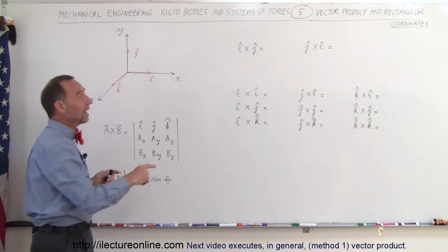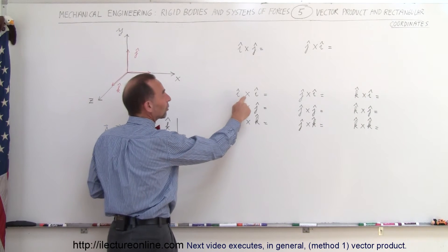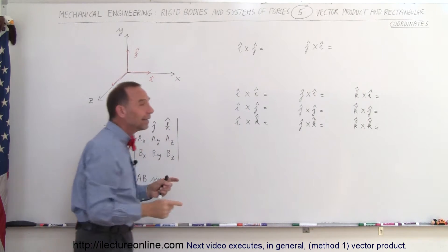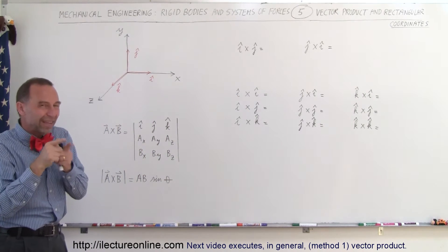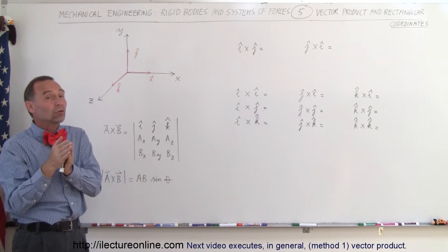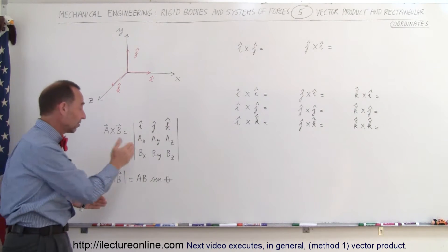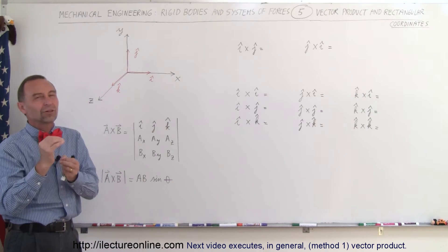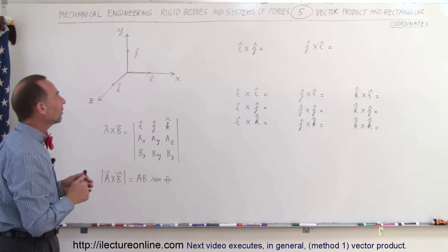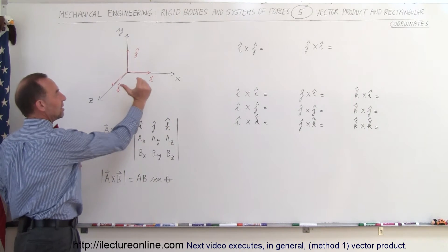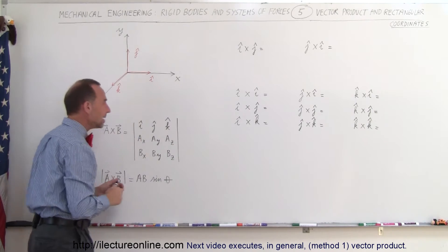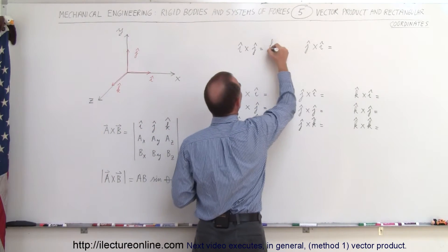Now of course we have the case where we do a cross product of I cross I, that's the same vector pointing in the same direction. The angle between those two vectors is going to be 0, and the sine of 0 is 0, so the result of that is going to be 0. Alright, so we have I cross J will give us the vector K.